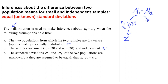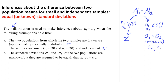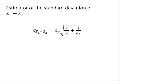Today we learn that when the sample size is less than 30 and sigma 1 is equal to sigma 2 but they are unknown — so we only have the values of S1 and S2 — we would be using the T distribution. To calculate the sample standard deviation of X bar 1 minus X bar 2, we use the formula of the pooled standard deviation, which is called SP.